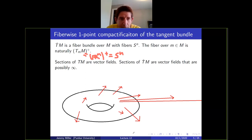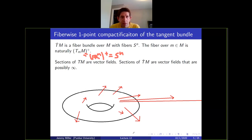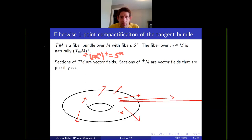In R^2 you might want an S^1's worth of infinities, but here we're only having one infinity. Intuitively, sections of this bundle are vector fields — the vector fields can take the value zero but also the value infinity. I'll define it using a formula, but I think the formula might be less helpful than just saying: you add a point at infinity in each fiber of the tangent bundle.